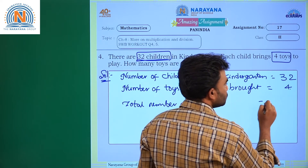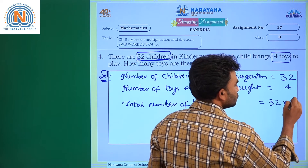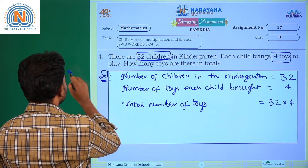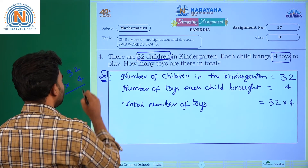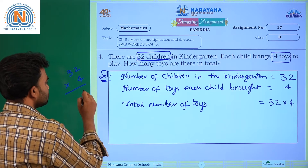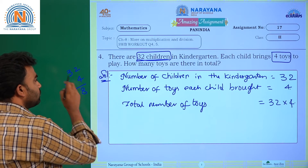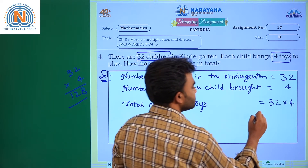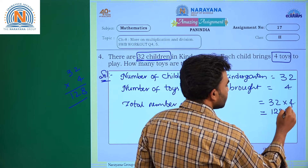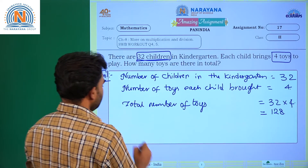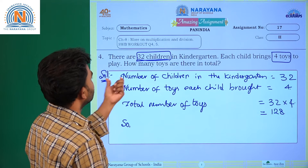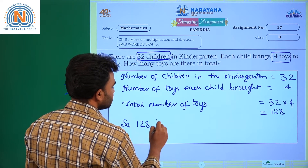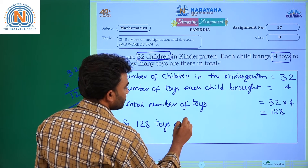Total number of toys is equal to 32 multiplied by 4. First multiply 4 with 2: 4 twos are 8. Next, 4 with 3: 4 threes are 12. So the answer is 128. Total number of toys is equal to 128 toys. So how many toys are there in total? 128 toys are there in all.